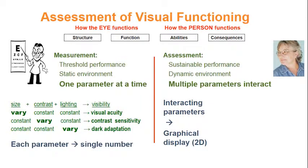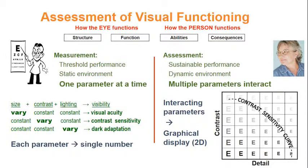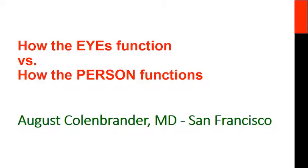On the right, where we deal with multiple interacting parameters, a single number does not suffice — we need at least a two-dimensional display. This diagram shows the interaction of contrast and detail and how it is captured by the contrast sensitivity curve, demonstrating that visual acuity and contrast are not independent variables: better contrast results in better acuity. In summary, because of all these differences, determining how the person functions is not just an extension of how the eyes function. The different aspects require different approaches and the efforts of different members of the vision rehabilitation team.